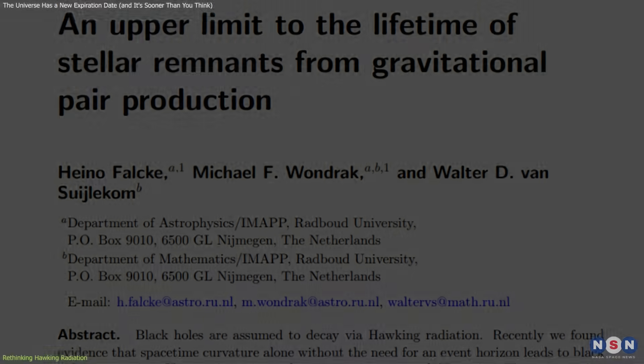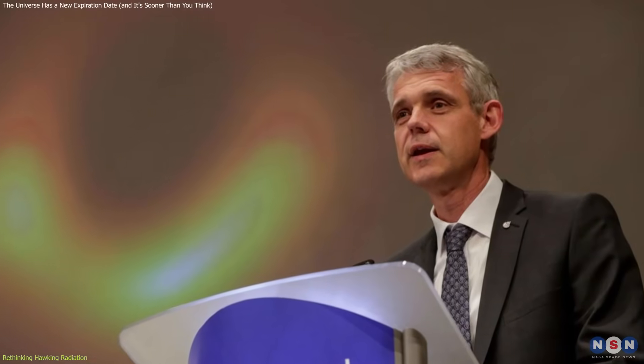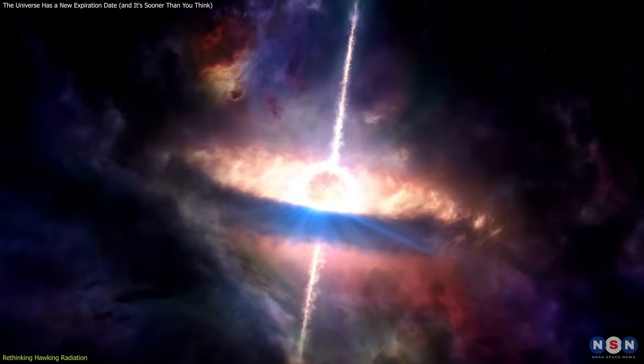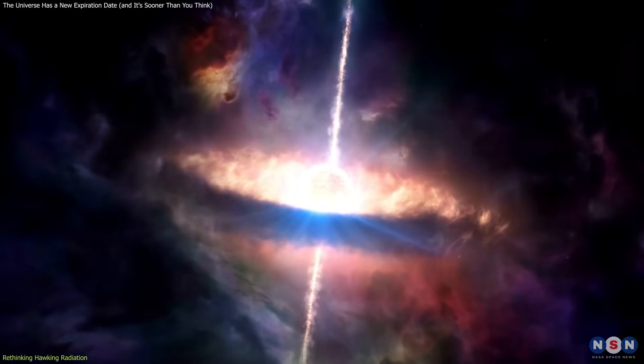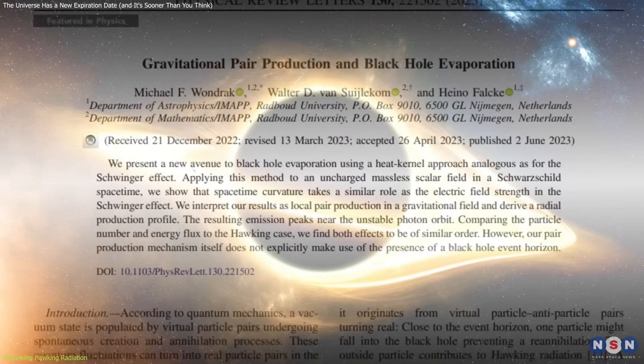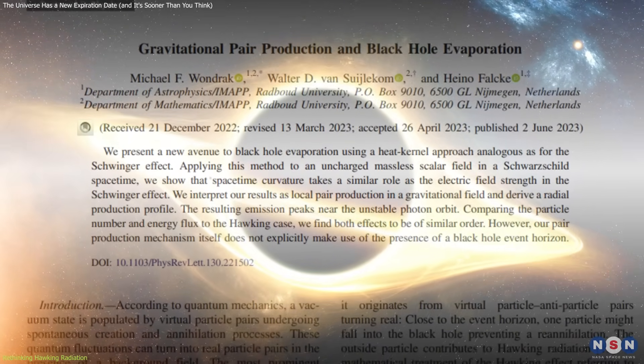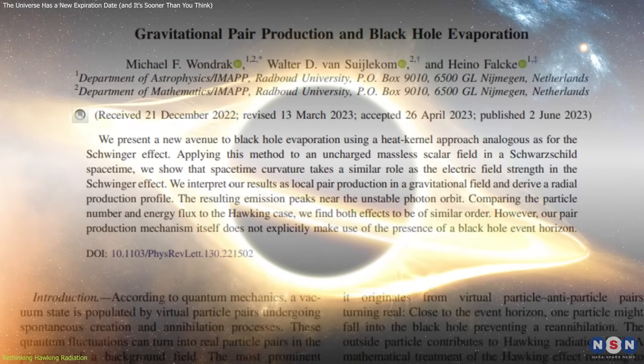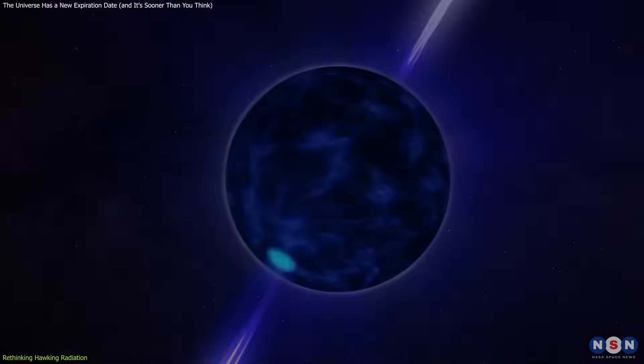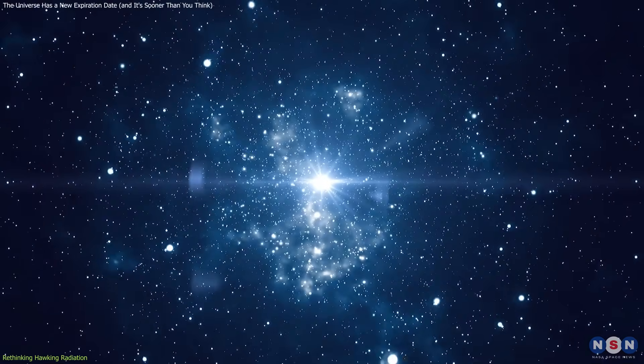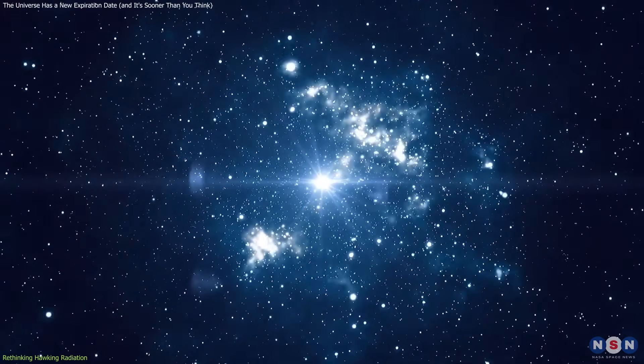But in a twist that deepens this theory, three researchers, black hole physicist Honno Falke, quantum expert Michael Wondrack, and mathematician Walter van Soylakom, expanded Hawking's idea beyond black holes. Their earlier 2023 paper proposed that Hawking-like radiation applies to any massive object with a gravitational field, including neutron stars and white dwarfs.